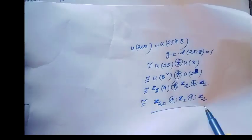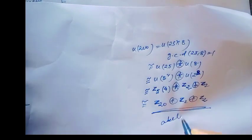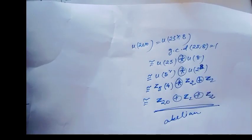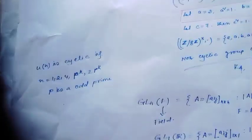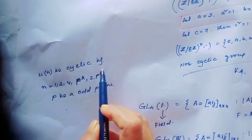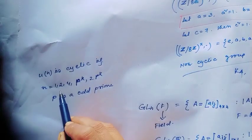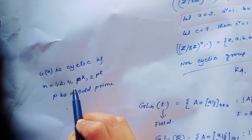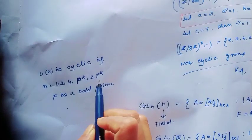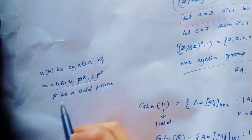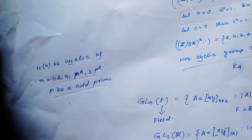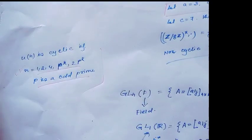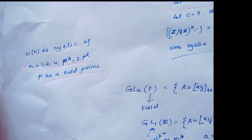This group is not cyclic but is abelian. Now for when Un is cyclic, there is a shortcut theorem: the group Un is cyclic if and only if n equals 1, 2, 4, p^k, or 2p^k, where p is an odd prime. When n is of such a form, the group Un is always cyclic. This property is very important for competitive exams.